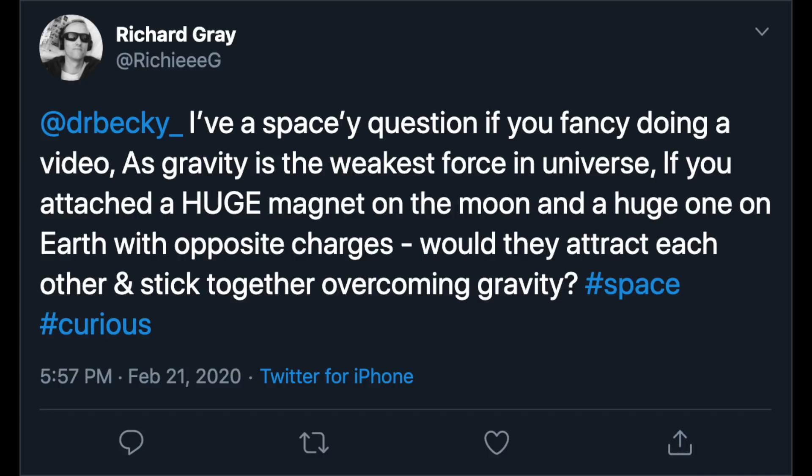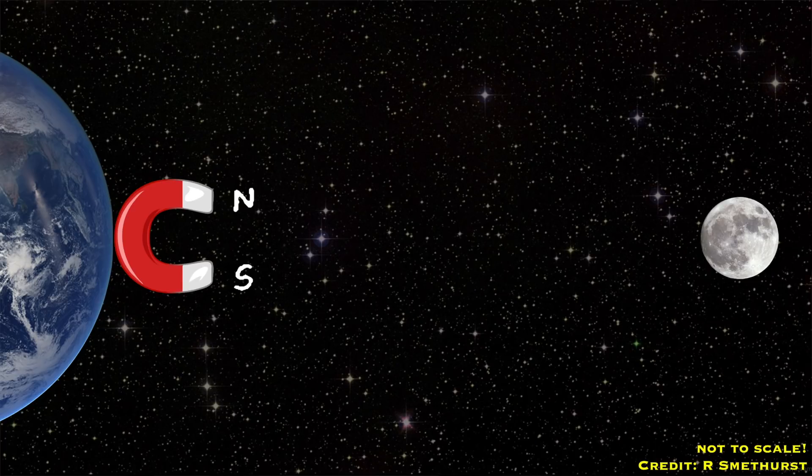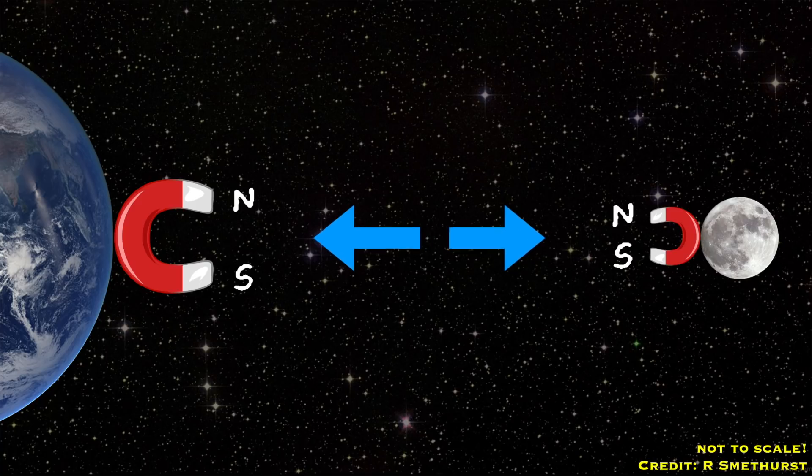All right, so I can't take credit for the initial idea to steal the moon. That came from a very curious subscriber on Twitter who is intrigued by this idea that gravity is so much weaker than the other forces. And so he said, could you, in theory, use a magnet to steal the moon? Now, you can't use one magnet on Earth and one magnet on the moon because both of those magnets would have north and south poles - one of which attracts and one of which repels. So you would essentially attract and repel the moon by the same amount if you used normal magnets.